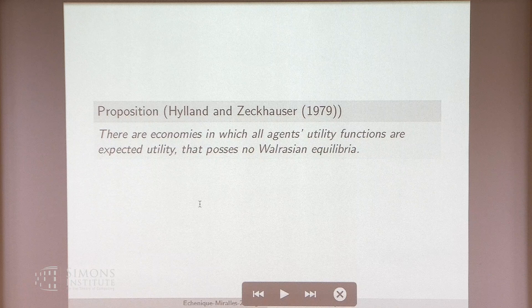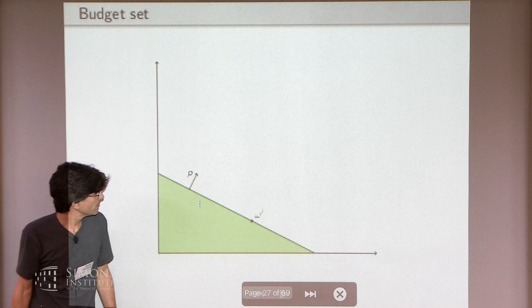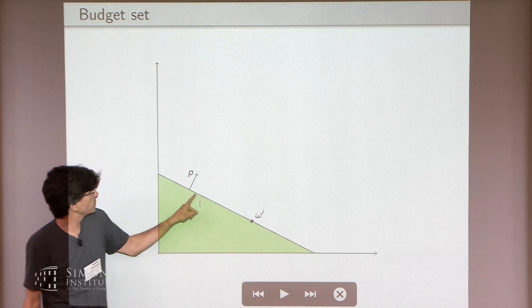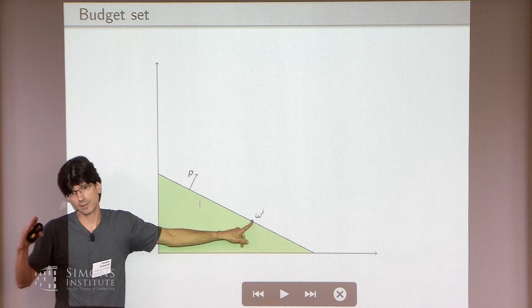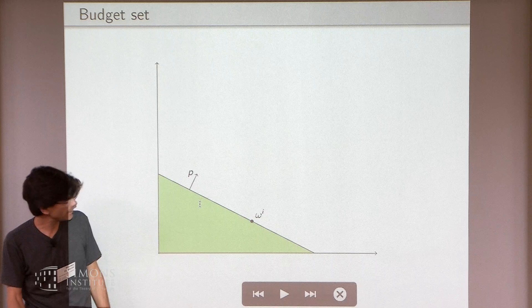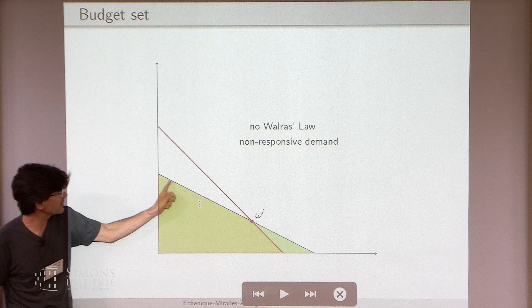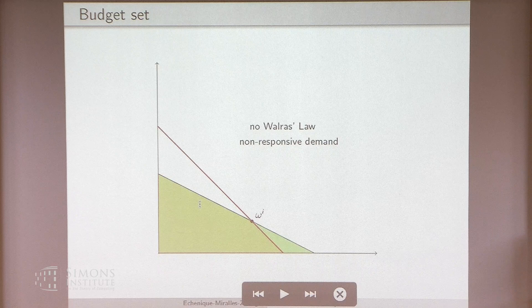What you need to understand is that budget sets are not the way we are used to thinking about them. If you open up Mas-Colell, Whinston and Green, you will see that you have an endowment and prices — you can afford everything in the budget set because you can sell your endowment at prices p and buy it back. The budget line must pass through the endowment. Now, in addition, there's the simplex constraint. So your budget set becomes the intersection: you look at this and say it's convex and compact. It turns out you can't use this. Here's an example.